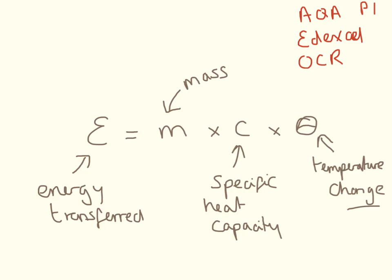So this is the equation for working out specific heat capacity. Energy transferred, that is going to be in joules. Mass is in kilograms. And this is temperature change here. And that's in degrees. And the units for specific heat capacity are joules per kilogram degrees.